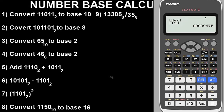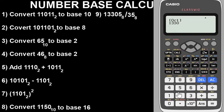Question nine is the last question. It asks us to divide two values that are both in base eight. Switch to Octal mode by pressing the OCT button. Input 13330, then press divide, then input 35. Press equals to see the result. That is basically how you can use the calculator to solve problems involving number base conversion and arithmetic.